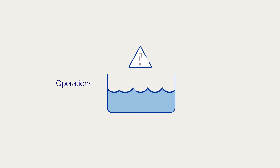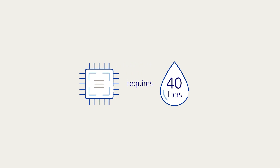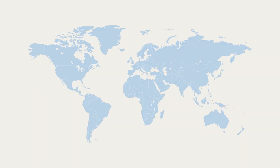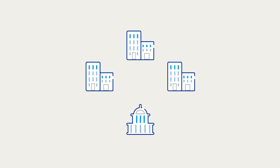For businesses, these finite resources are a risk to both operations and supply chains. Take the semiconductor industry — to make one computer chip requires around 40 litres of water. The top three manufacturers of chips are in California, China, and Taiwan, with factories situated in drought regions. For corporates to mitigate the risk of water shortages, they need to work with governments to build resilience and avoid the worst impact of water stress.